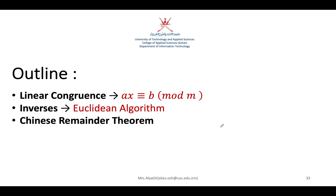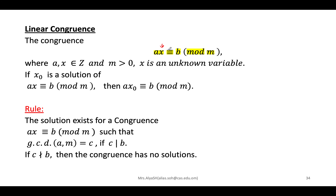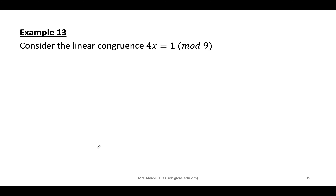Today we introduce linear congruence and how to solve it, inverses using the Euclidean algorithm, and the Chinese Remainder Theorem. A linear congruence has the form ax ≡ b mod m. To find whether a solution x exists, compute gcd(a, m) — if it divides b, a solution exists; otherwise it does not.